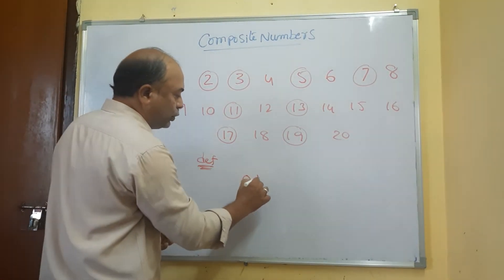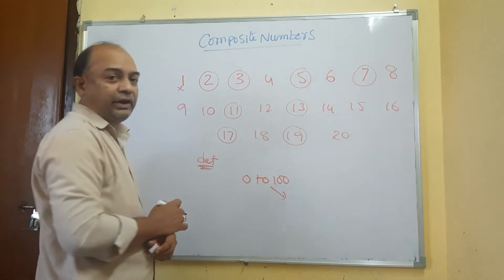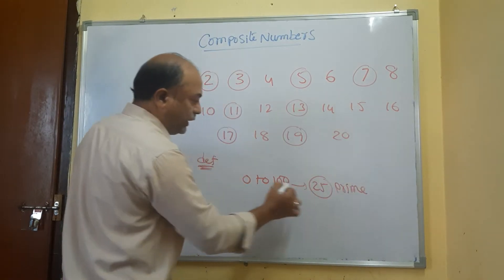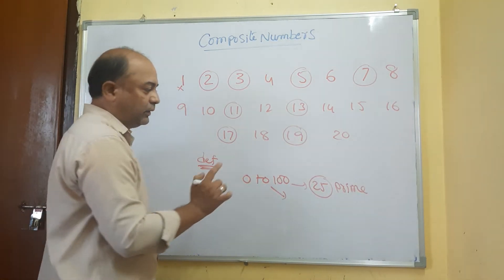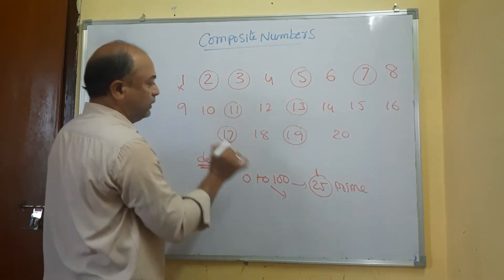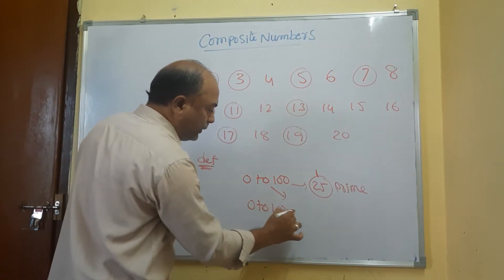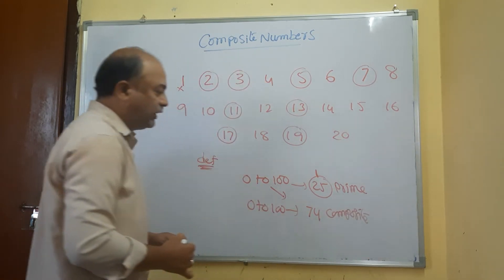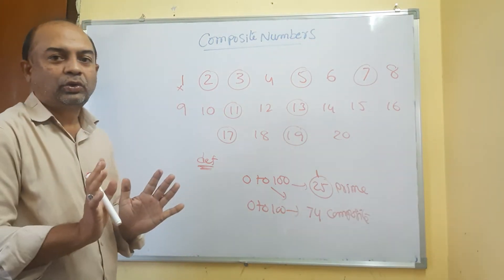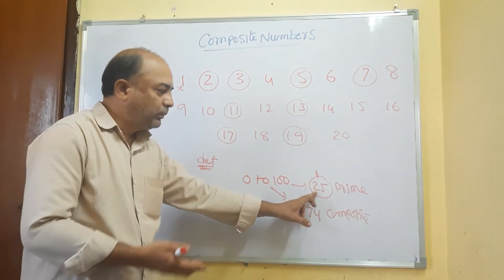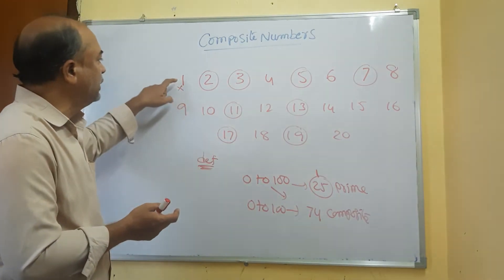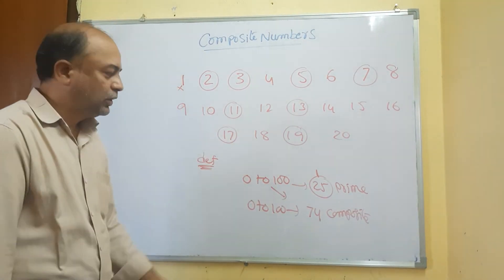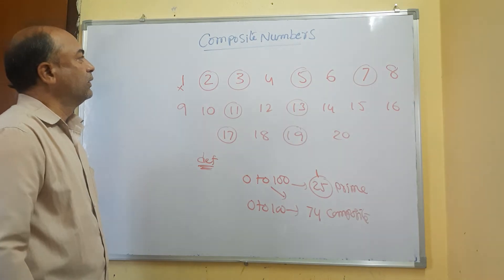From 0 to 100, there are 25 prime numbers. Since 1 is neither prime nor composite, from 0 to 100 there are 74 composite numbers. That is because 100 minus 26 equals 74 composite numbers from 0 to 100.